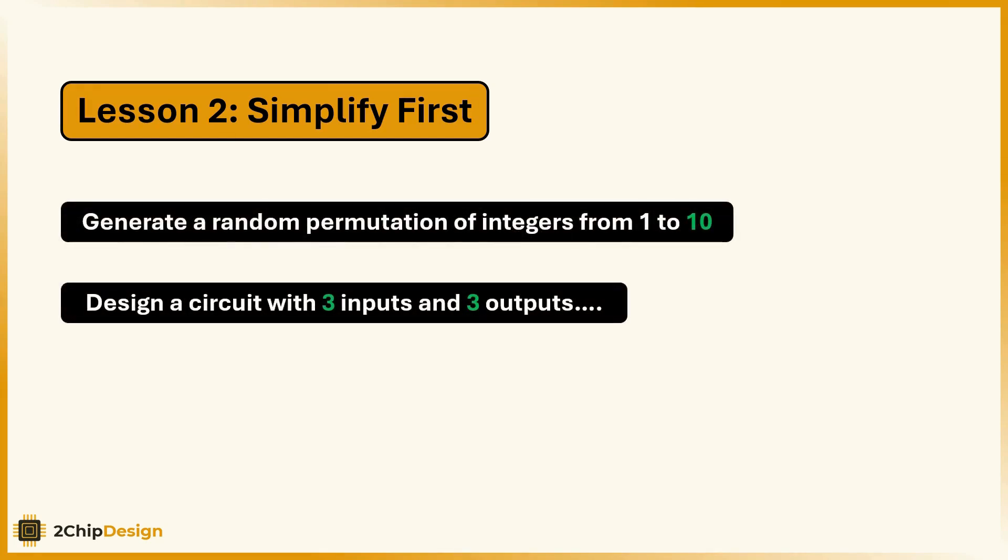Instead of n, I go, generate a permutation from 1 to 10, or design a circuit with 3 inputs and 3 outputs. That makes it way easier to reason through. Once I understand the simplified version, I can generalize from there.